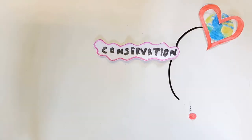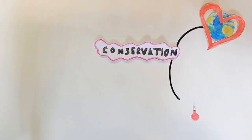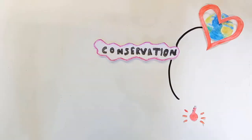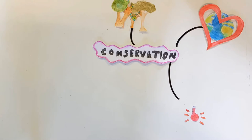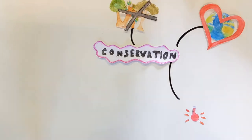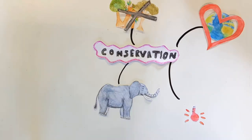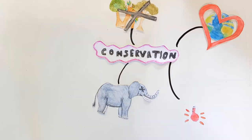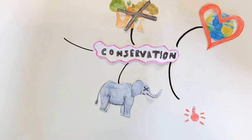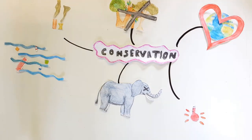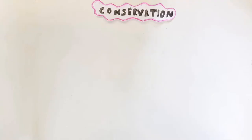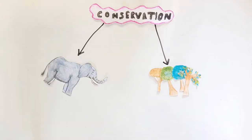Conservation means protecting the earth from things such as climate change, protecting habitats from being destroyed, protecting animals from going extinct, and protecting the earth from pollution such as plastic in our oceans.